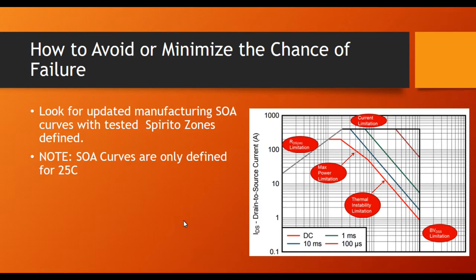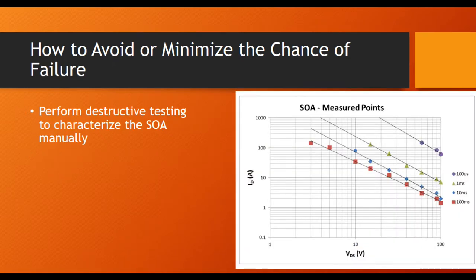Check out the manufacturer's SOA curves. If they don't have tested Spirito zones on their SOA curves, then you're going to need to end up testing them. And that's really the last thing you can probably do is test, and that will give you the definition or define the boundary of the SOA operation that you can achieve with the device that you've chosen.